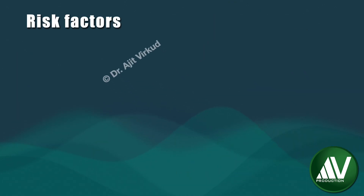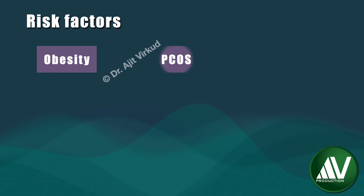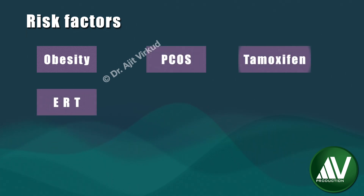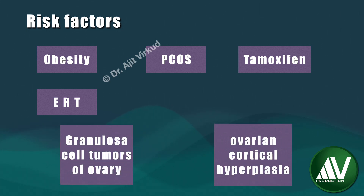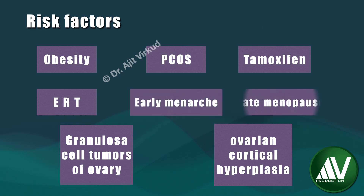Some of the risk factors associated with endometrial hyperplasia are obesity, PCOS, estrogen replacement therapy, tamoxifen, functional granulosa cell tumors of the ovary, or rarely ovarian cortical hyperplasia. Early menarche and late menopause are other risk factors. Mitigation or treatment of these risk factors, if possible, will go a long way in preventing endometrial hyperplasia.